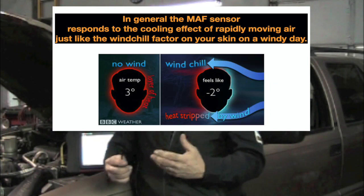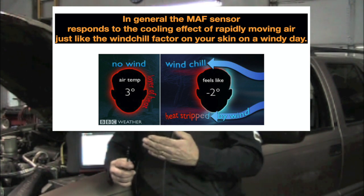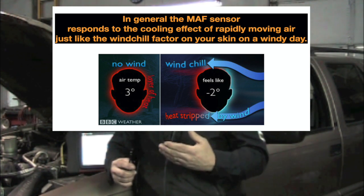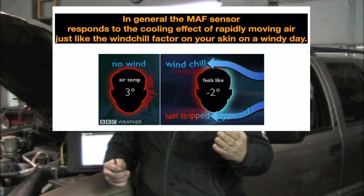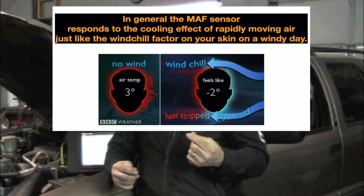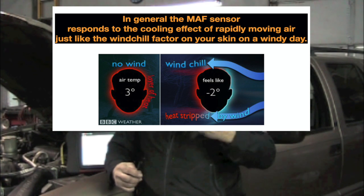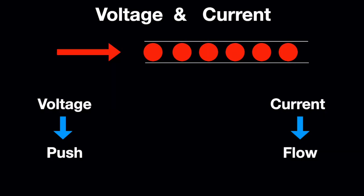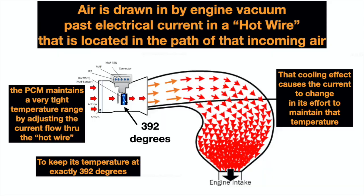Just like your weatherman reports a wind chill factor when it's windy and cold out — because air passing over something that's hot will cool it — that hot wire is going to cool as air is rushed past it. The PCM then monitors that temperature, compares it to the actual temperature of the air, and says we're not at 392 degrees, so it flows more current. Remember, volts don't create heat — current does. So it flows more current over that wire to keep it at 392 degrees.